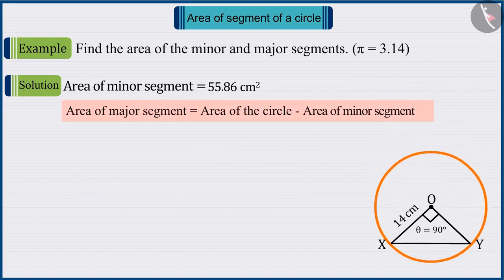Absolutely correct. For this, from the area of the circle, the area of the minor segment is subtracted.